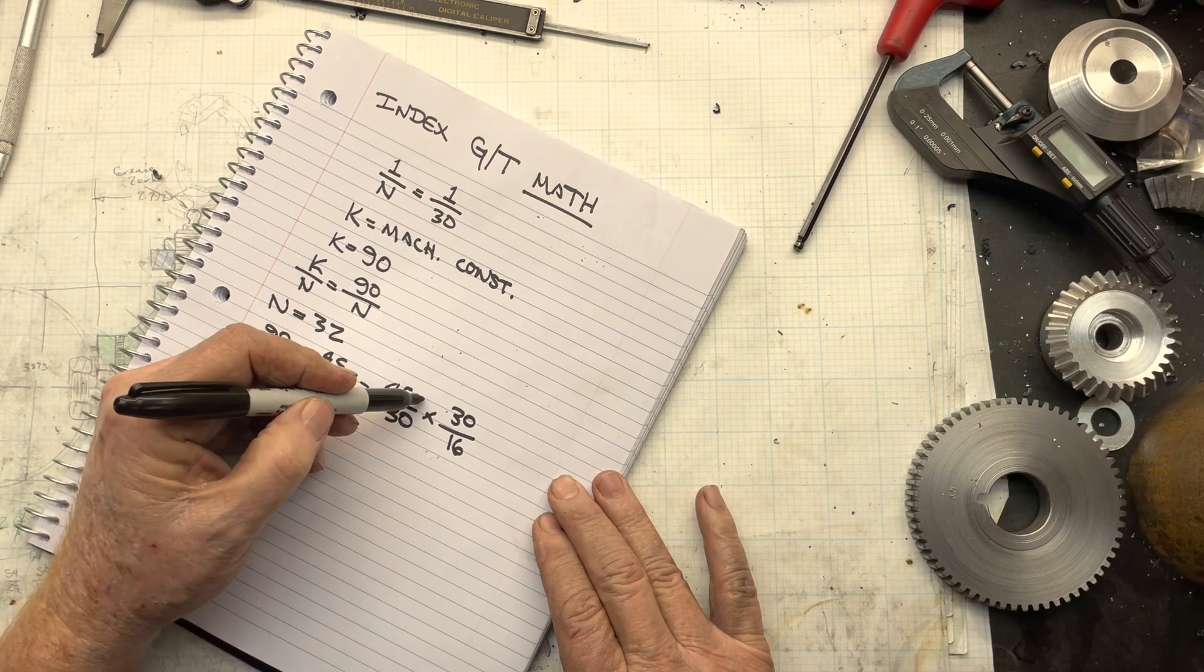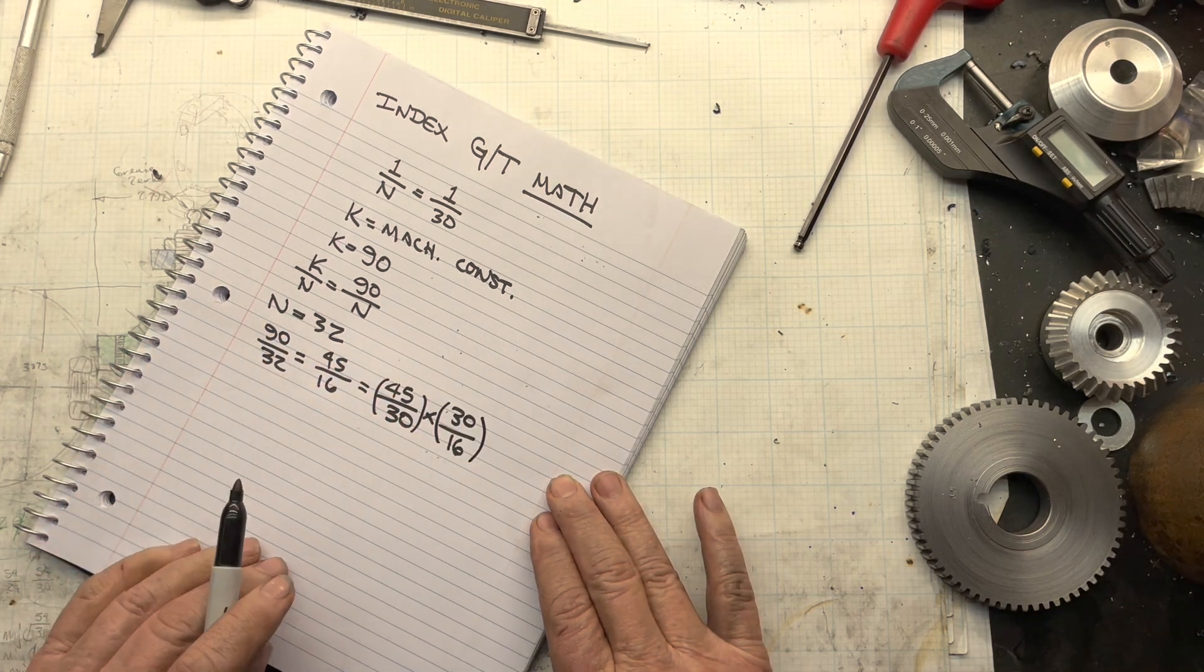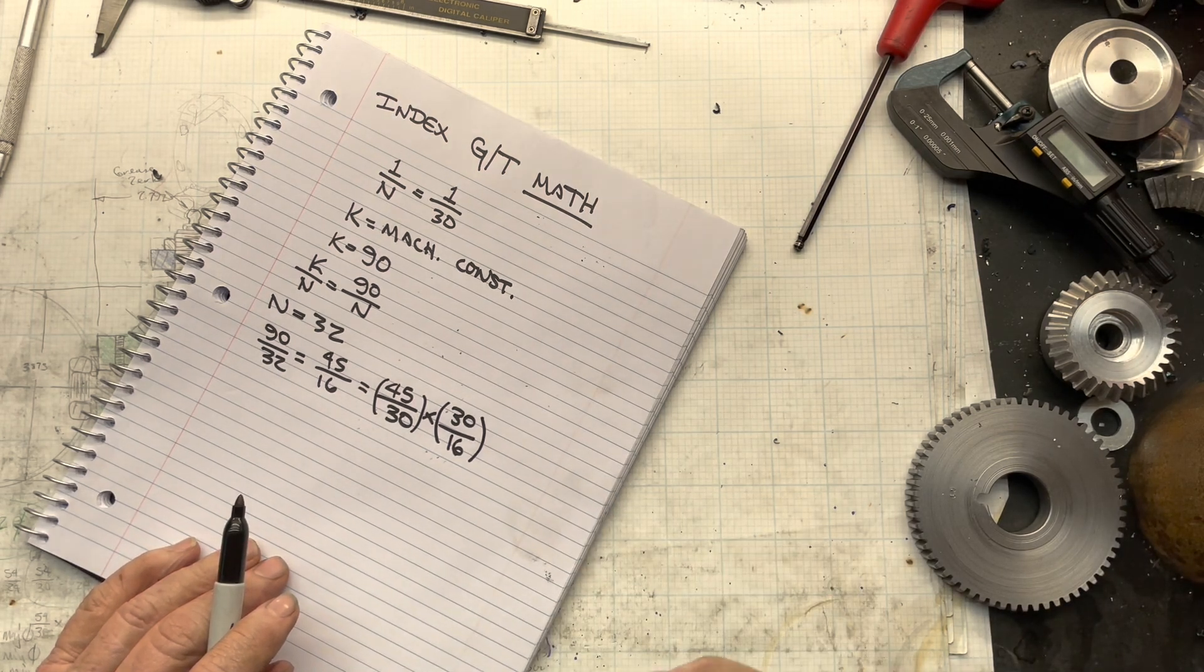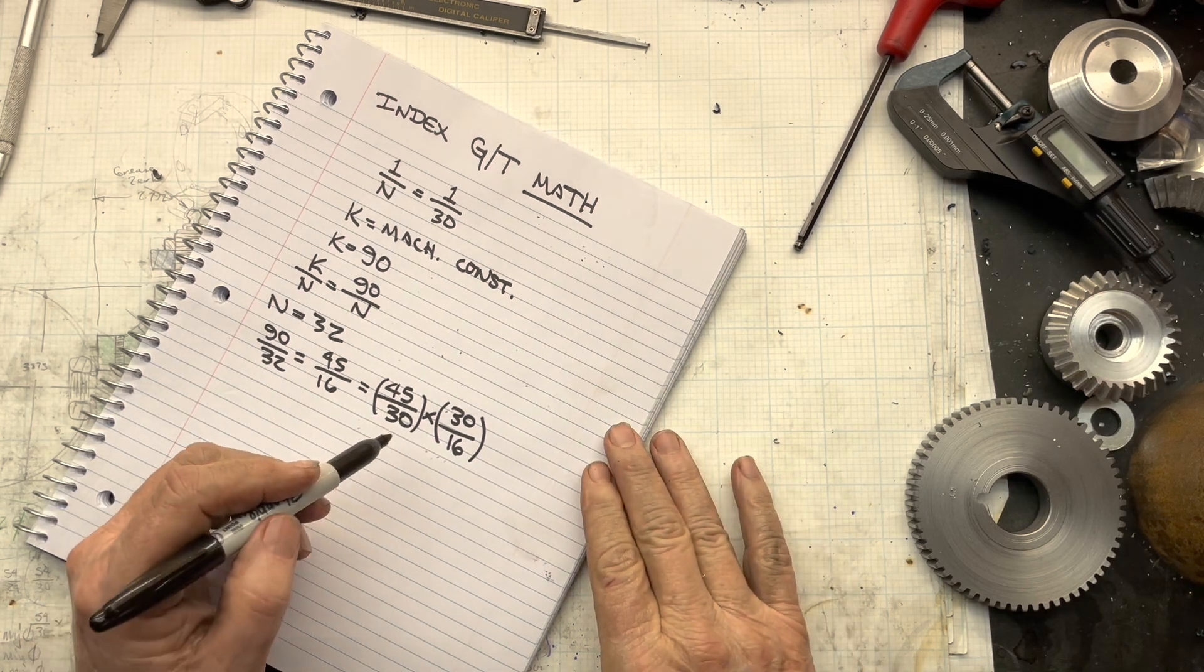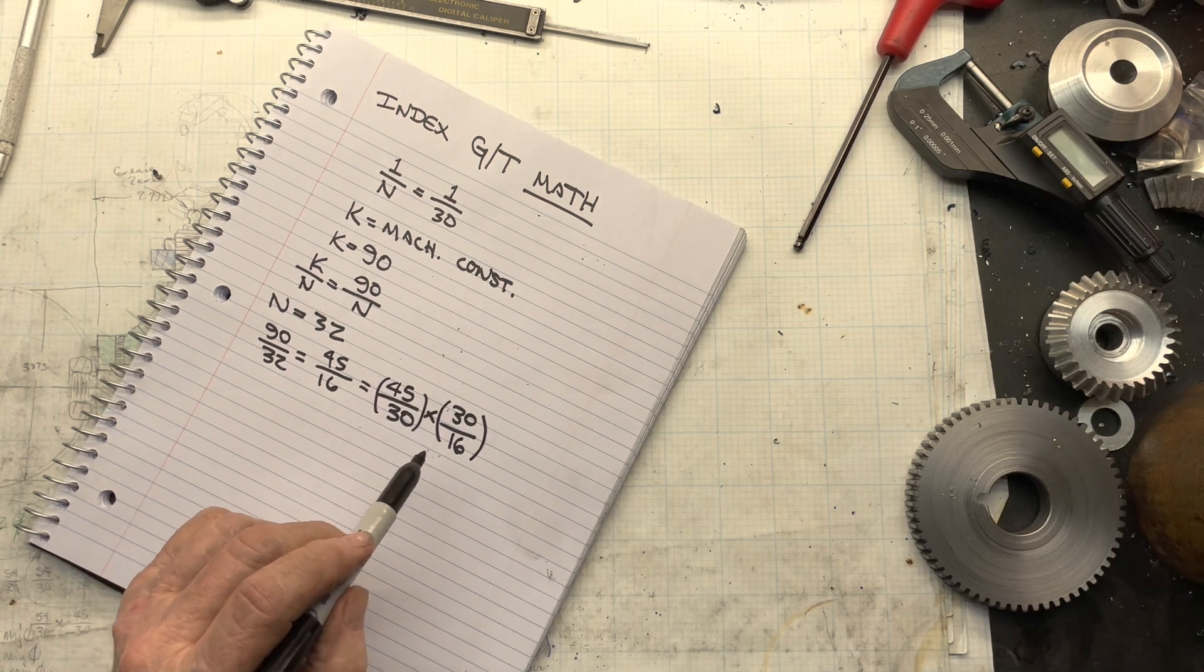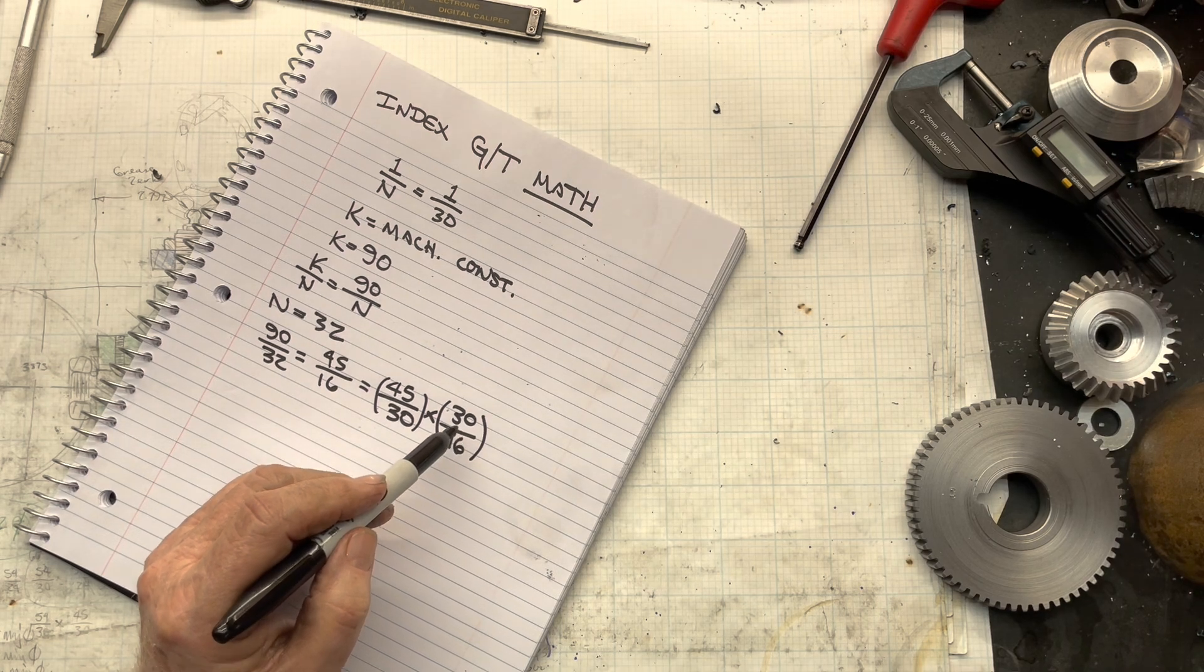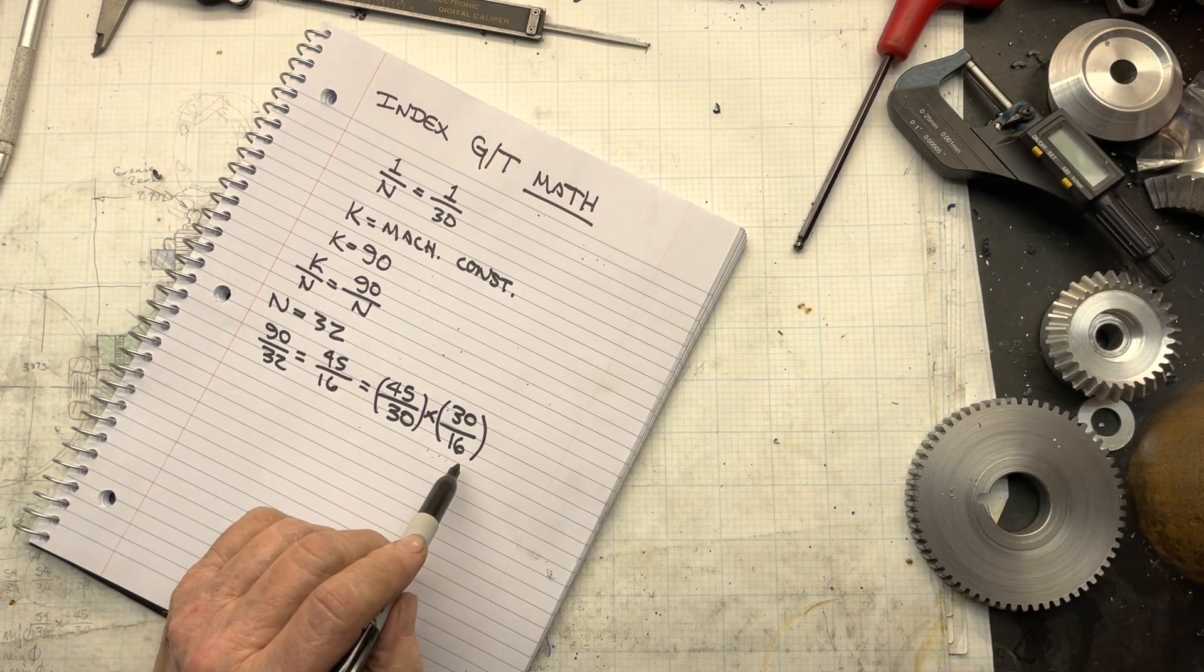Now, each one of these pairs is a gear pair that results in an increase or decrease in rotational speed through the train. In this case, it's 45 teeth mated with a 30-tooth gear. That's one pair. And the second stage of speed control is this one, which is 30 over 16. But again, the 16 is too small, and I can't use that.